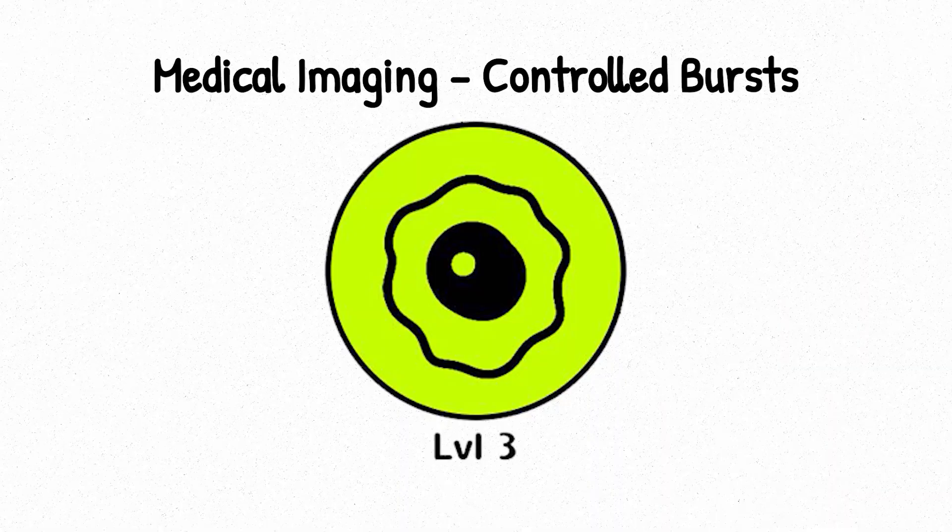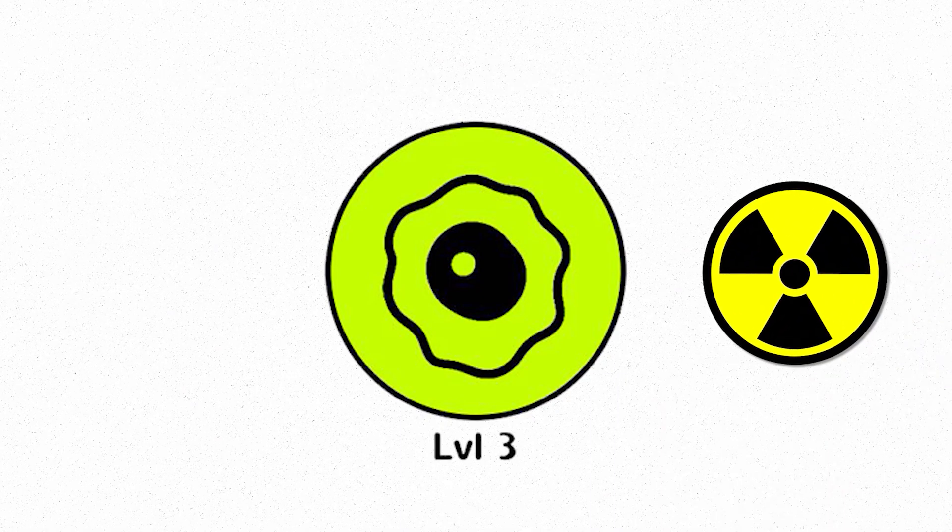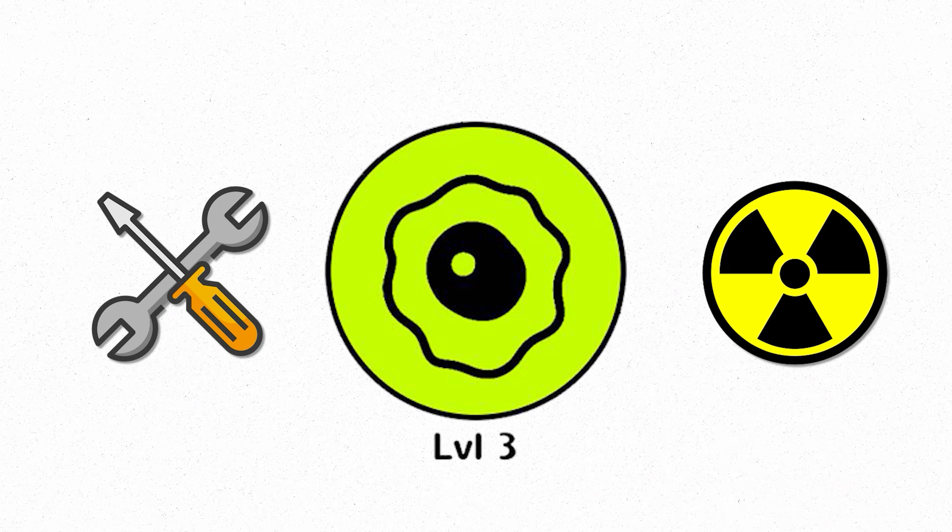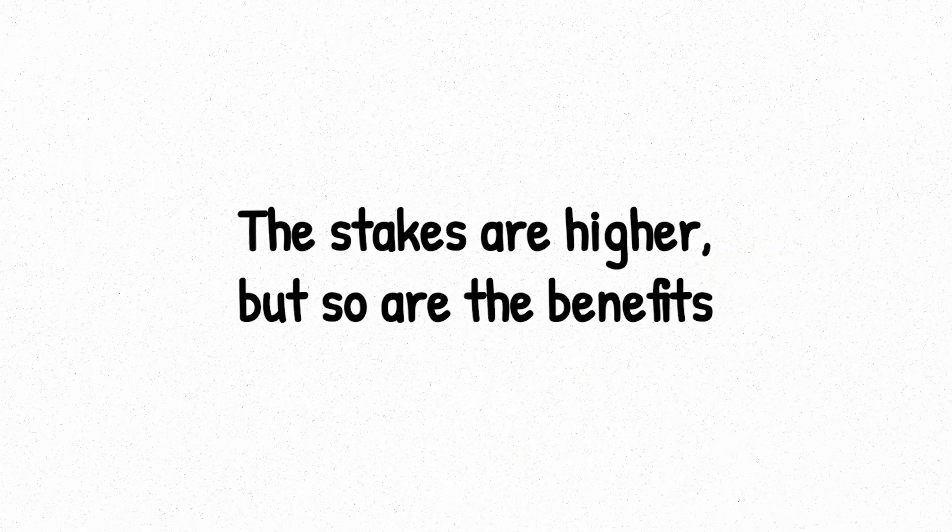Level 3, Medical Imaging, Controlled Bursts. At level 3, radiation steps out of the background and becomes a tool, precise, intentional, and powerful. This level spans 100 microsieverts to 10 millisieverts, and it's where we start using radiation to see inside the body. The stakes are higher, but so are the benefits.